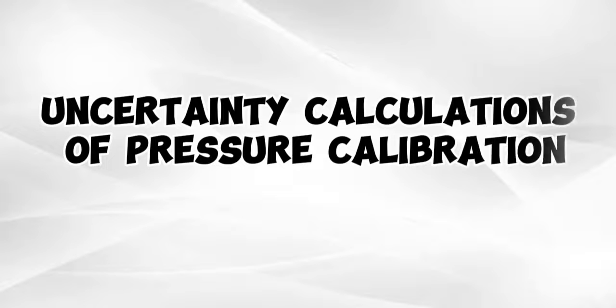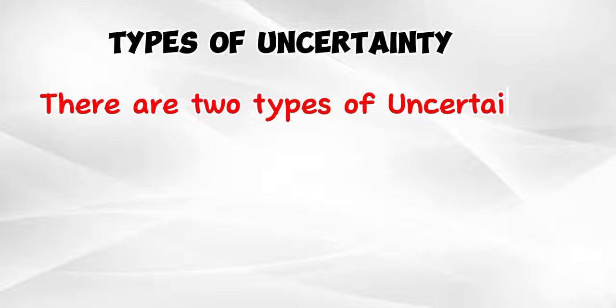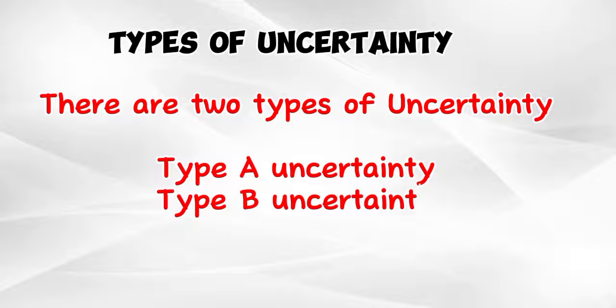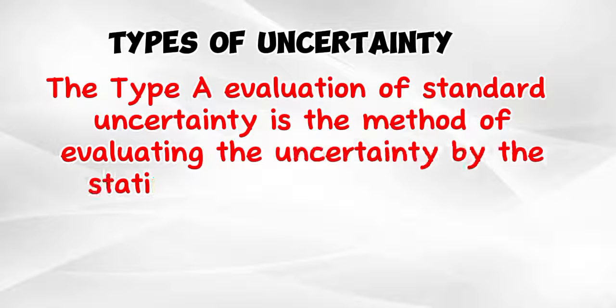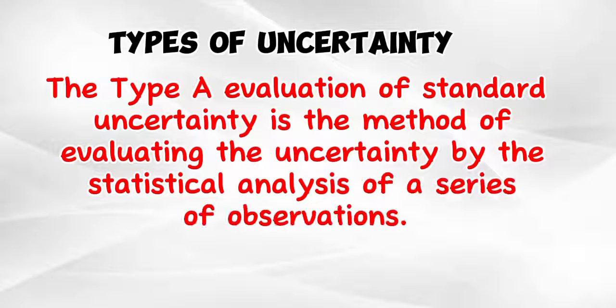Uncertainty Calculations of Pressure Calibration. Types of Uncertainty: There are two types of uncertainty. Type A evaluation of standard uncertainty is the method of evaluating the uncertainty by the statistical analysis of a series of observations.